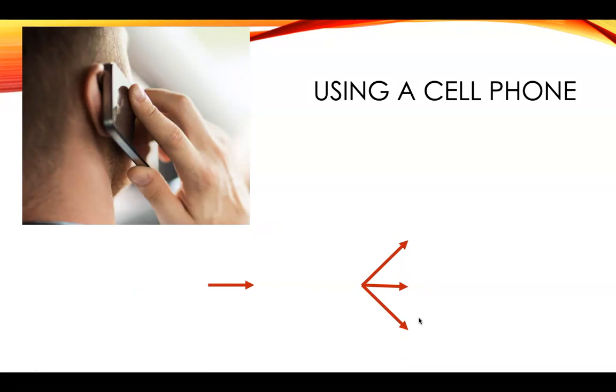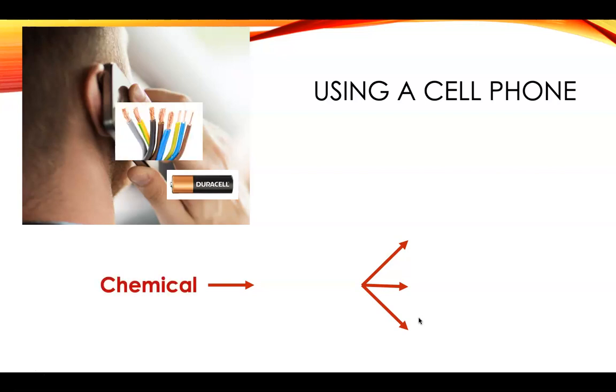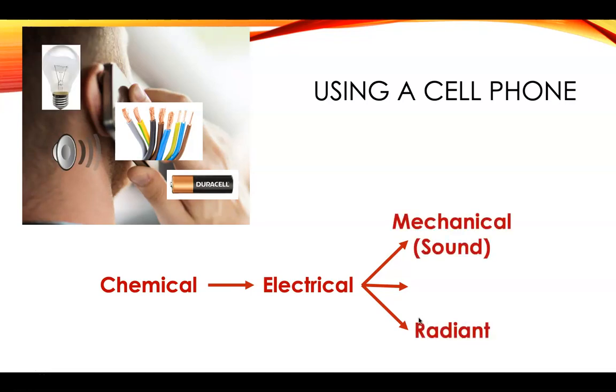Using a cell phone. Cell phones run on a battery, not necessarily a Duracell battery, but still a battery, which is chemical energy. There's wiring inside, so electrical. And then the things that come out of it. Well, you hear noises, which is mechanical sound energy. The screen lights up, which is radiant. And after a while, if you're using your phone for a long time, you'll notice that it heats up. So thermal energy.